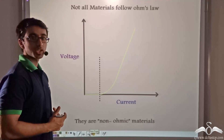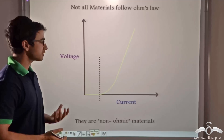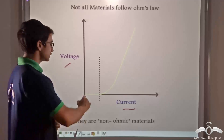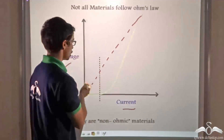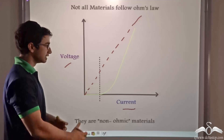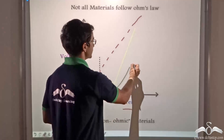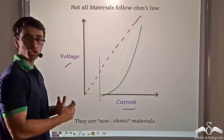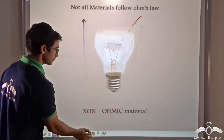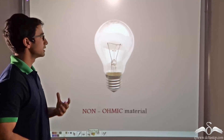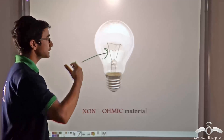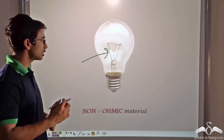There are also materials known as non-ohmic materials. In the case of non-ohmic materials, the curve between voltage and current is not a linear curve passing through the origin. The relationship obtained is a non-linear one, which clearly does not follow Ohm's law. For example, the filament of a bulb is considered a non-ohmic material because it does not follow Ohm's law.